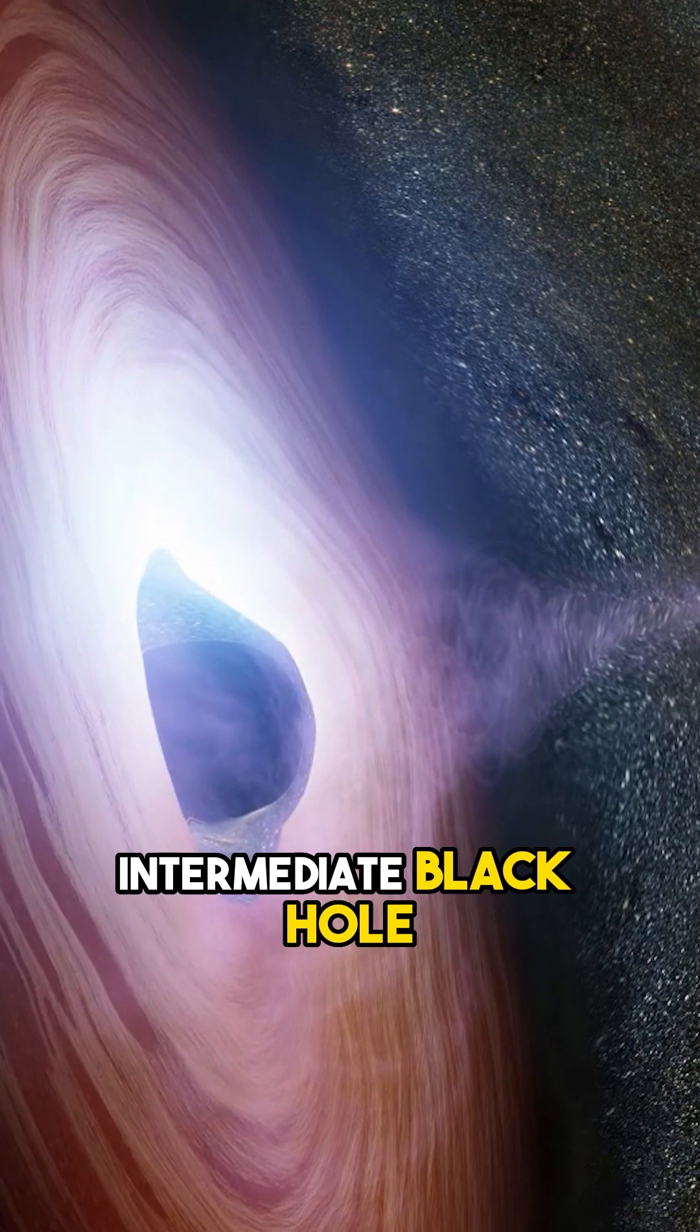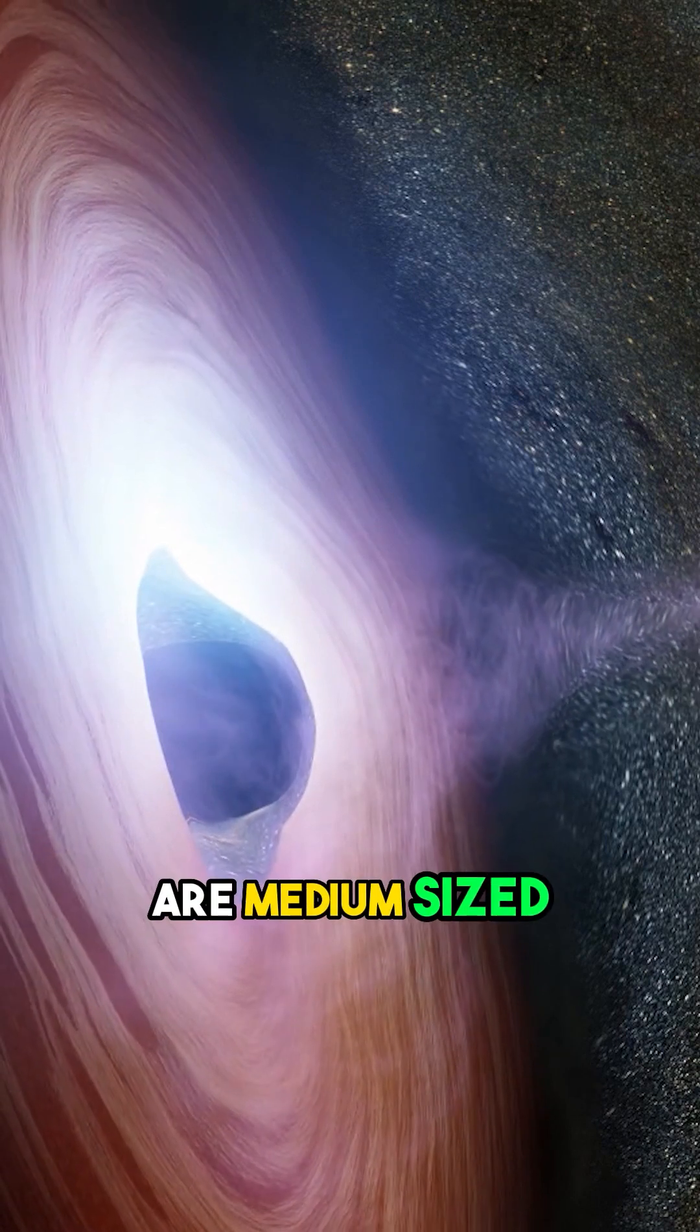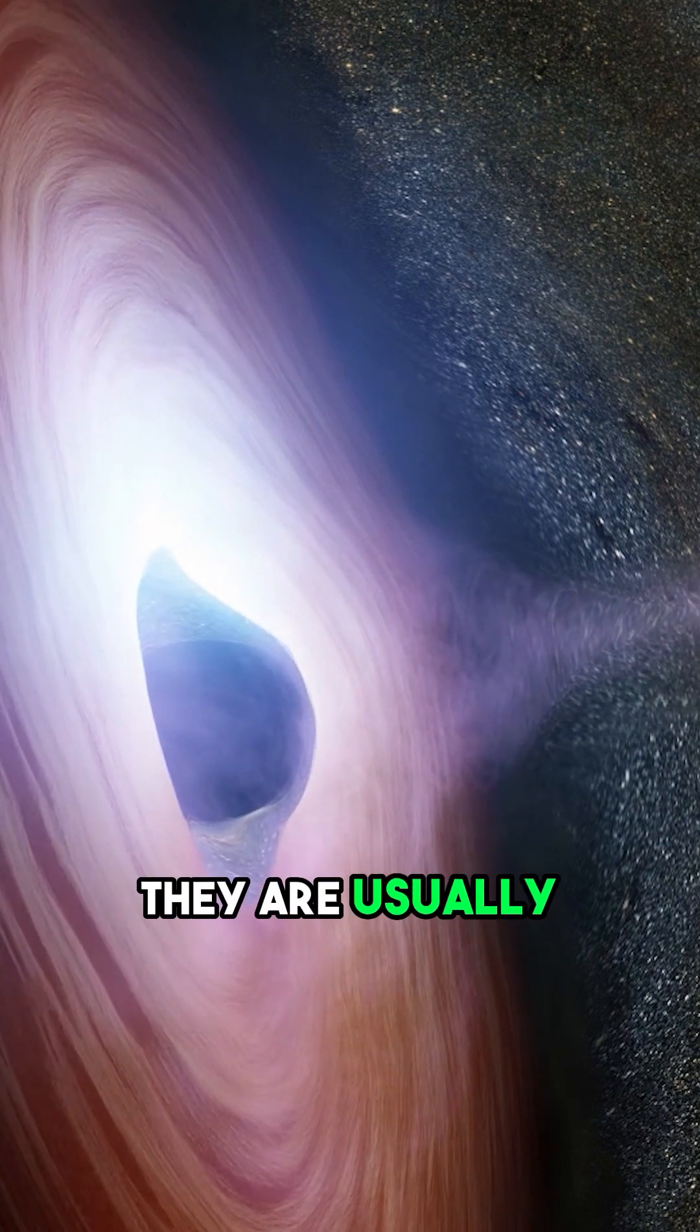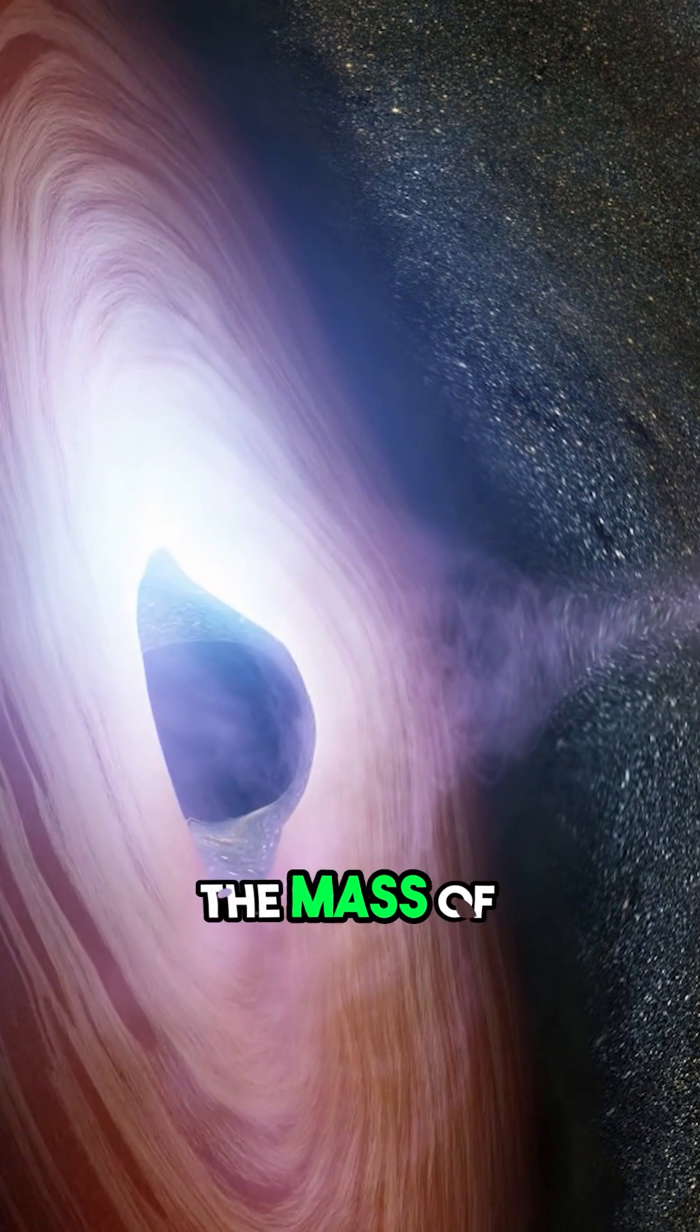The third is the intermediate black hole. These black holes are medium-sized and mostly found in dwarf galaxies. They are usually 10 to 100,000 times the mass of the sun.